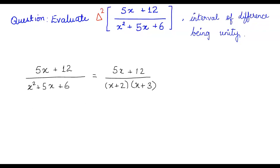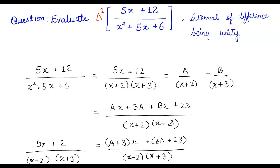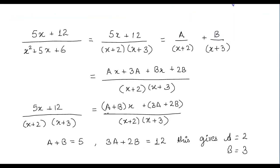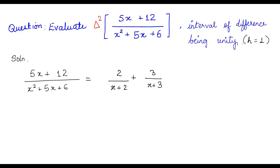To simplify further, we take partial fractions: (5x+12)/[(x+2)(x+3)] = A/(x+2) + B/(x+3). Taking LCM and equating like terms in the numerator, we get A+B = 5 and 3A+2B = 12. Solving these two equations gives A = 2 and B = 3. Substituting these values back, our expression is rewritten as 2/(x+2) + 3/(x+3).